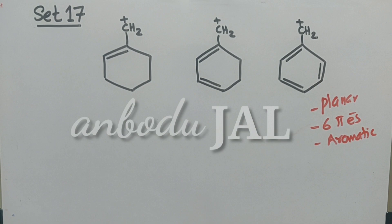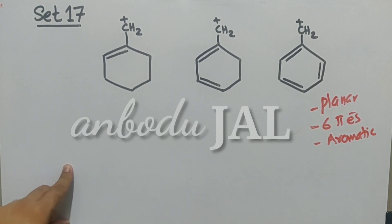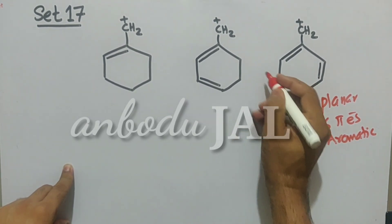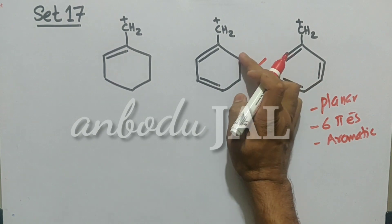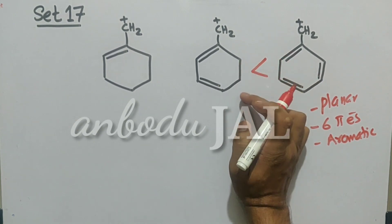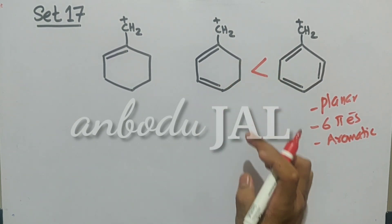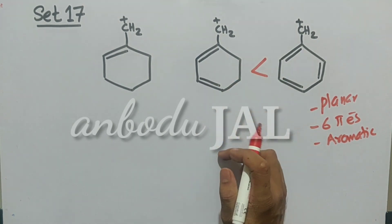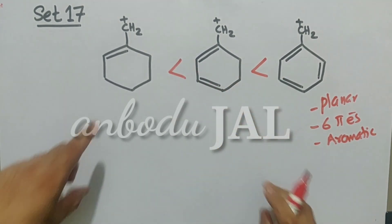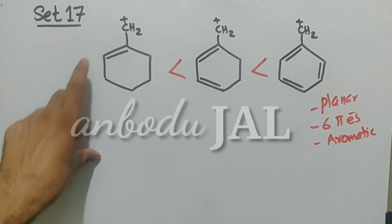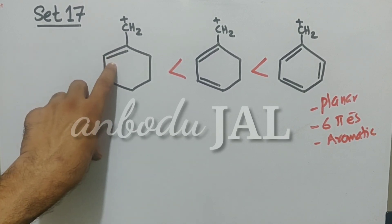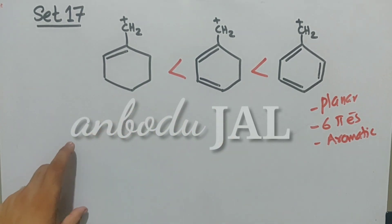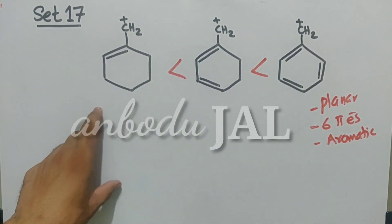If a carbocation is aromatic, then it will be most stable. This third structure is most stable. The second structure is not aromatic due to the presence of 2 sp3 carbon atoms, but there is conjugation and resonance is possible. In the last structure also, resonance is possible due to conjugation, but the number of resonance structures will be minimum. So this is the order of stability of these carbocations.